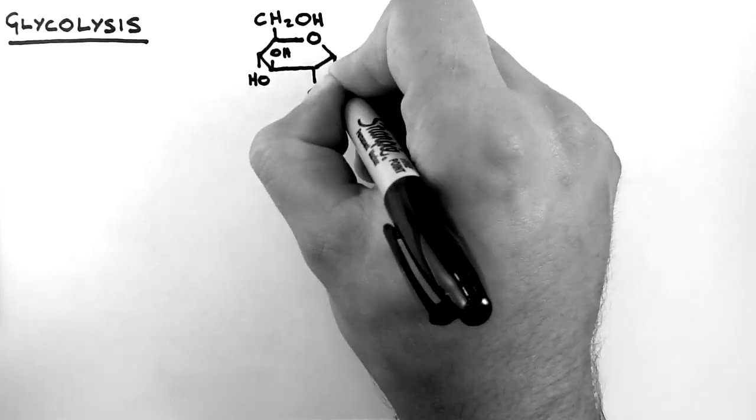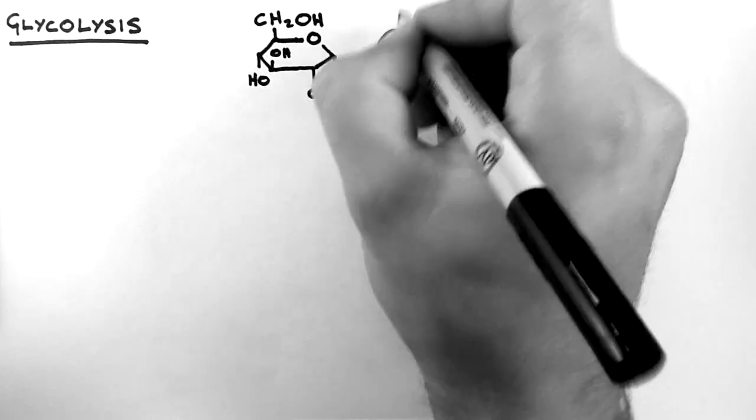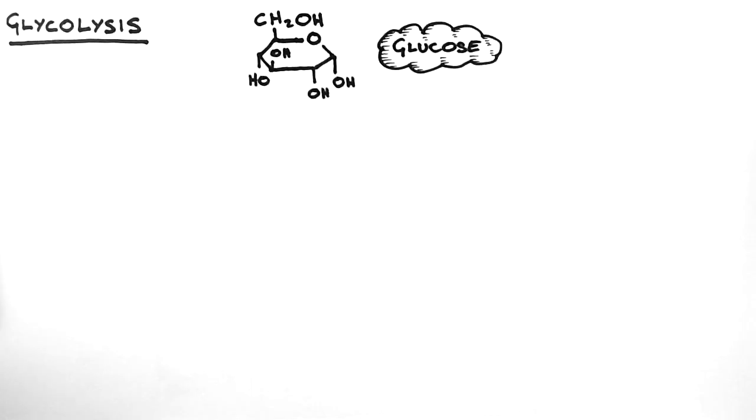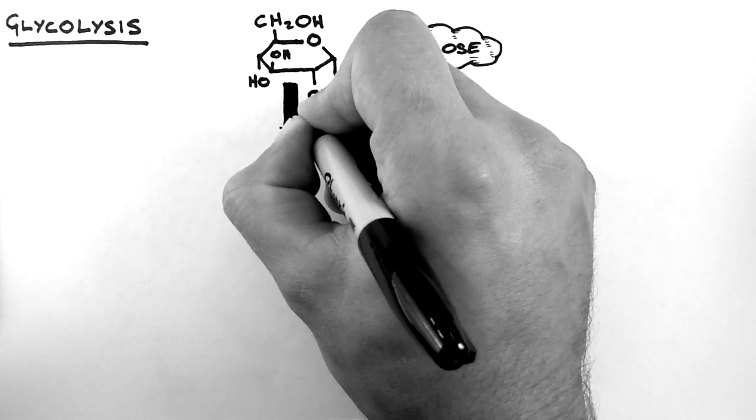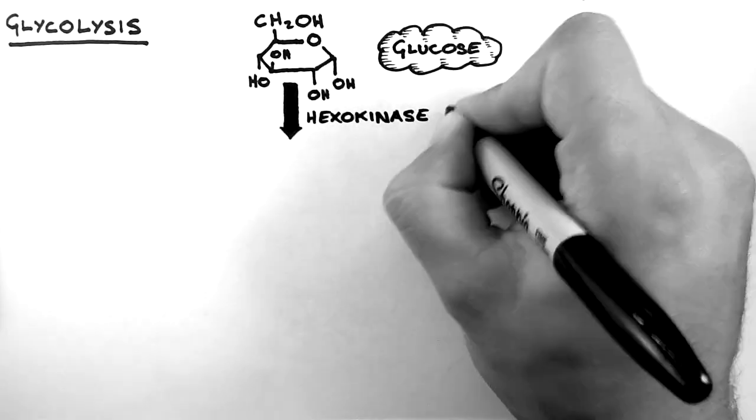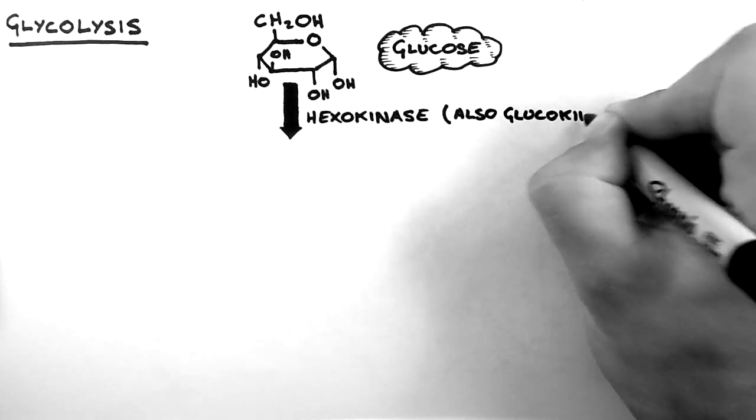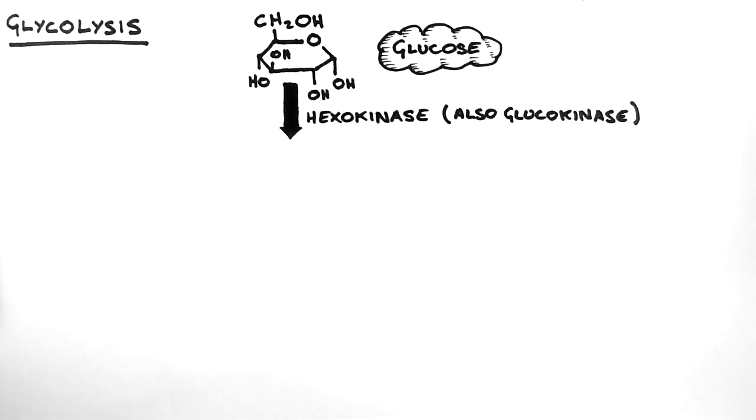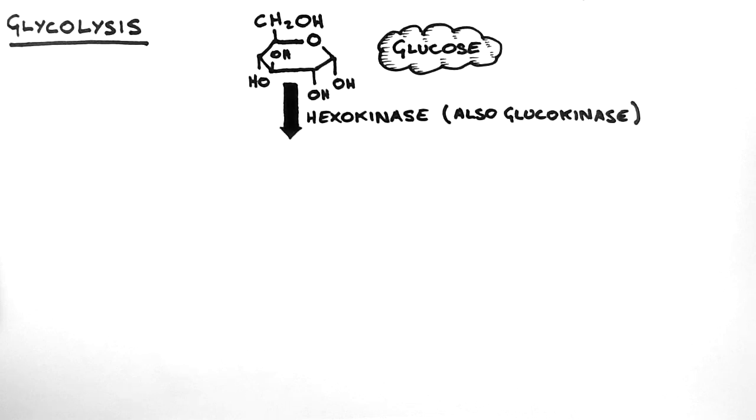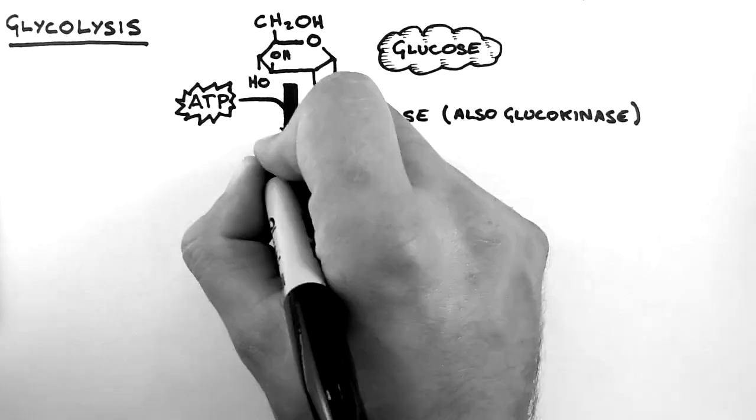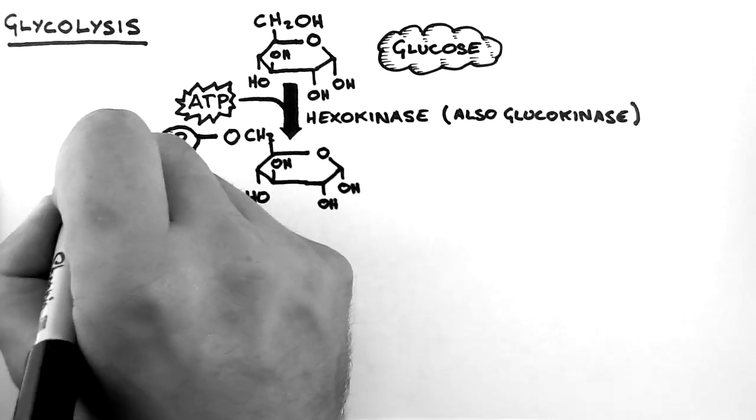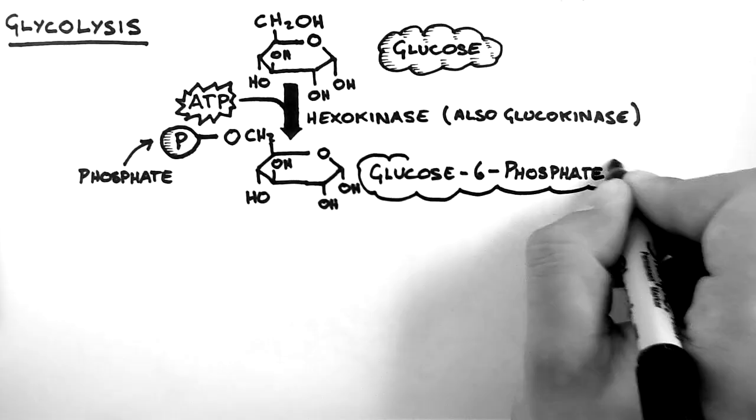Glycolysis begins with the molecule glucose. The enzyme that begins this process is called hexokinase, or glucokinase in the liver. A kinase is an enzyme which adds phosphate groups onto things by taking them off an ATP. That's exactly what happens here. An ATP donates a phosphate to the glucose and creates this molecule, glucose 6-phosphate.